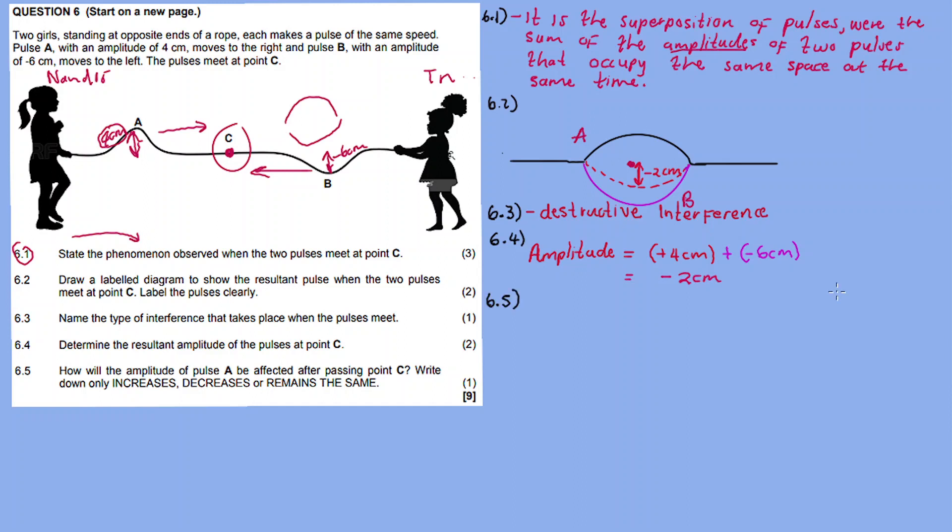6.5, the last question: How will the amplitude of pulse A be affected after passing point C? After the destructive interference, the amplitudes don't get affected. So the amplitude of pulse A remains constant or the same - remains the same.